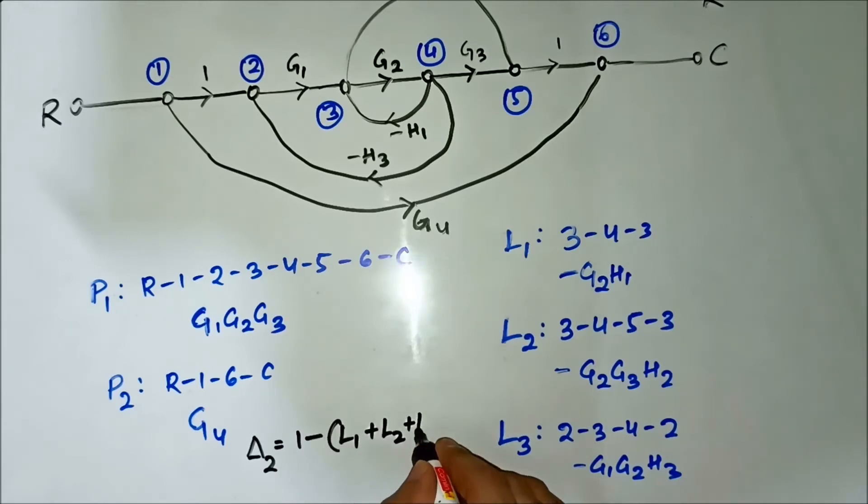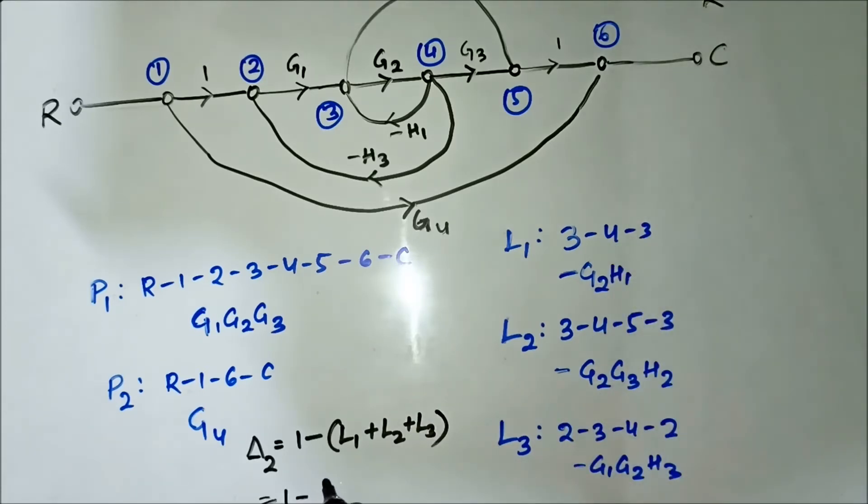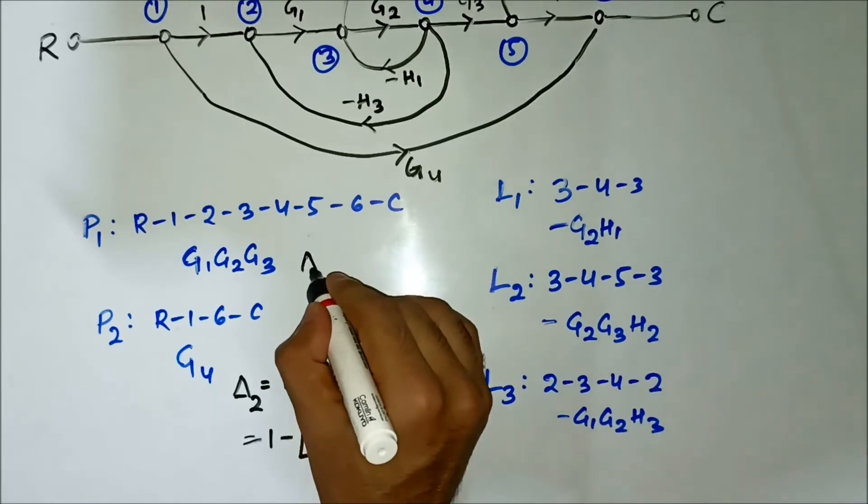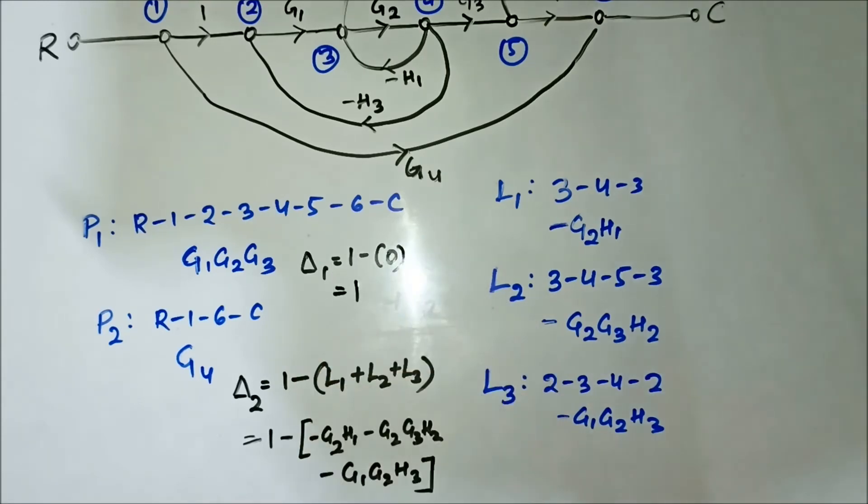So it is 1 minus (−g2h1) minus (−g2·g3·h2) minus (−g1·g2·h3). And here path factor Δ1 is 1 minus 0, which is equal to 1.